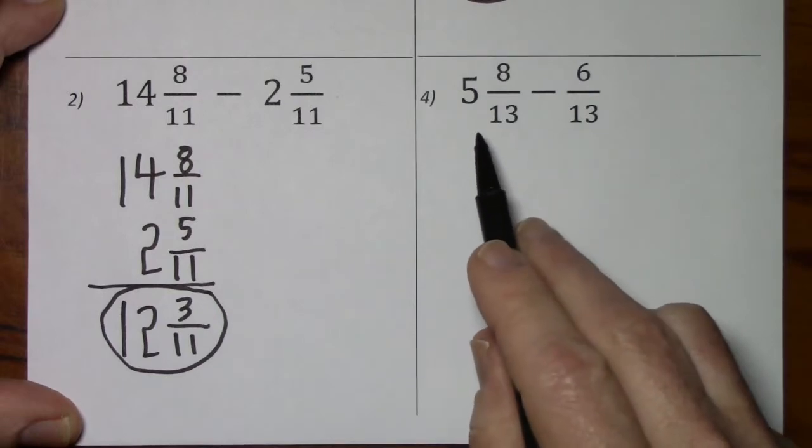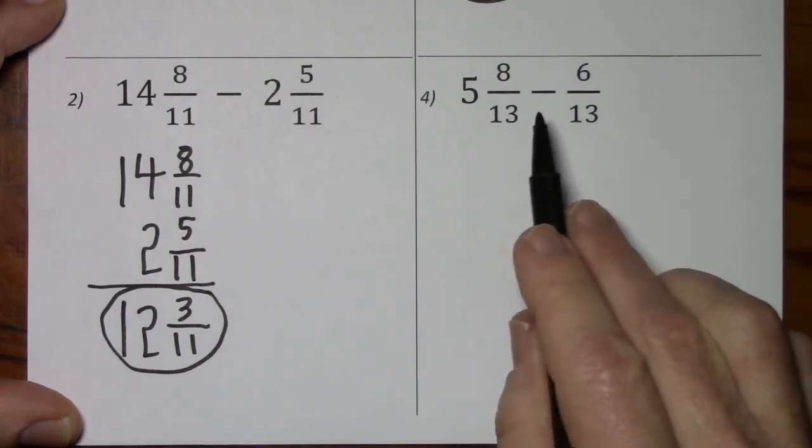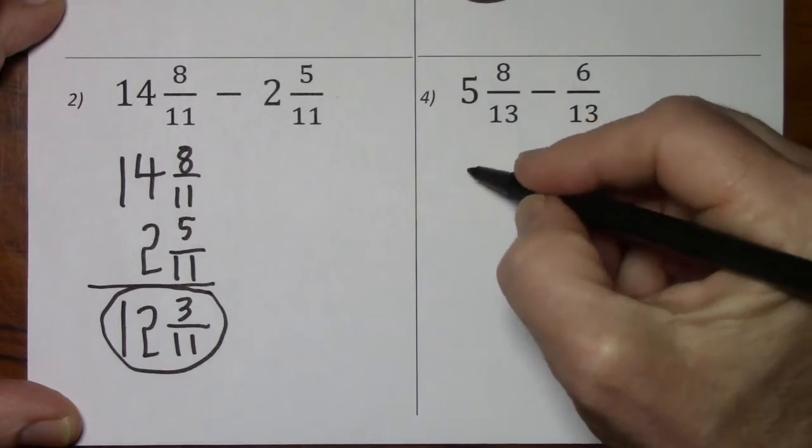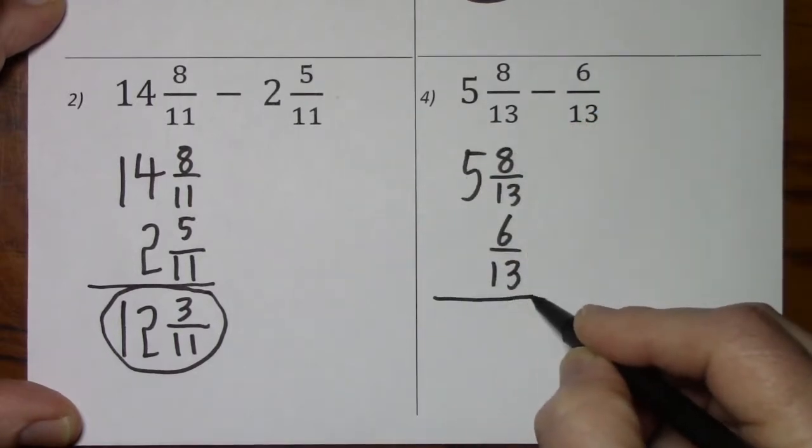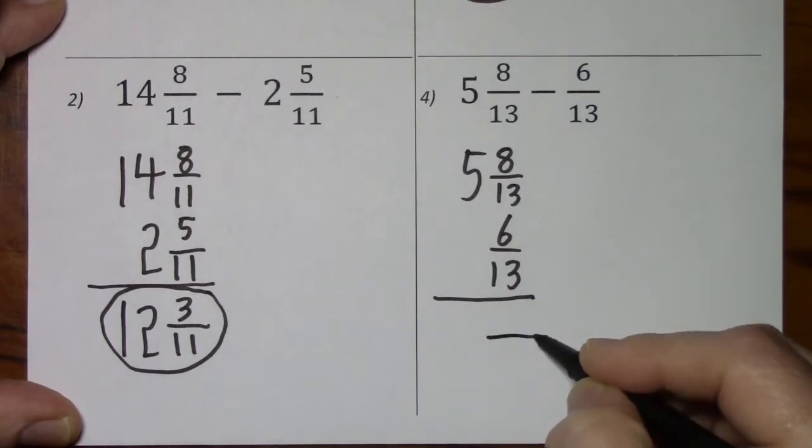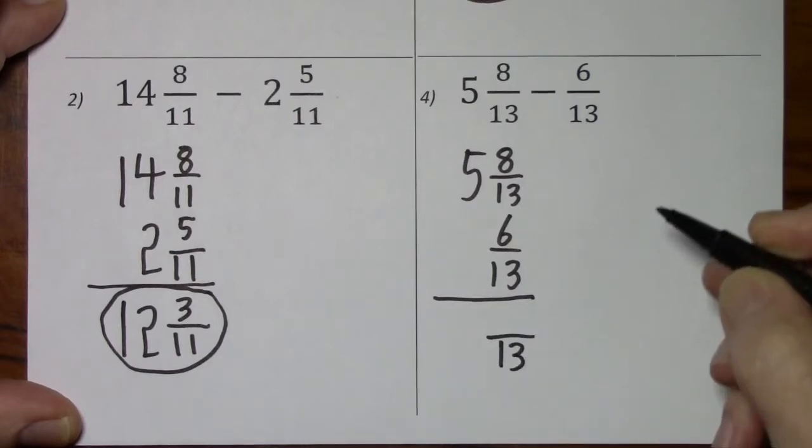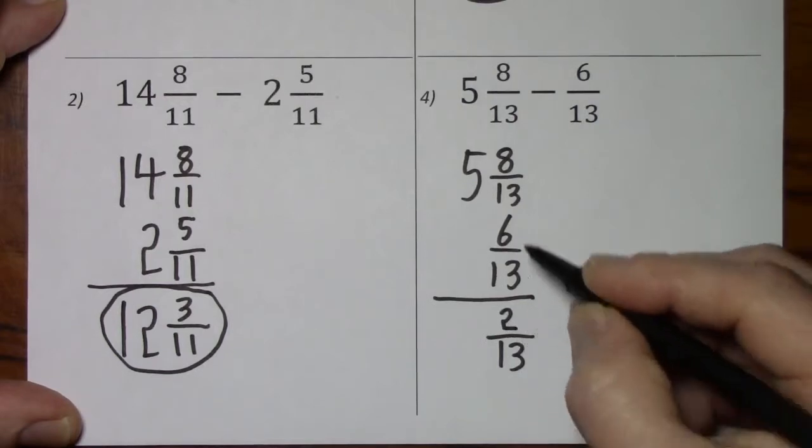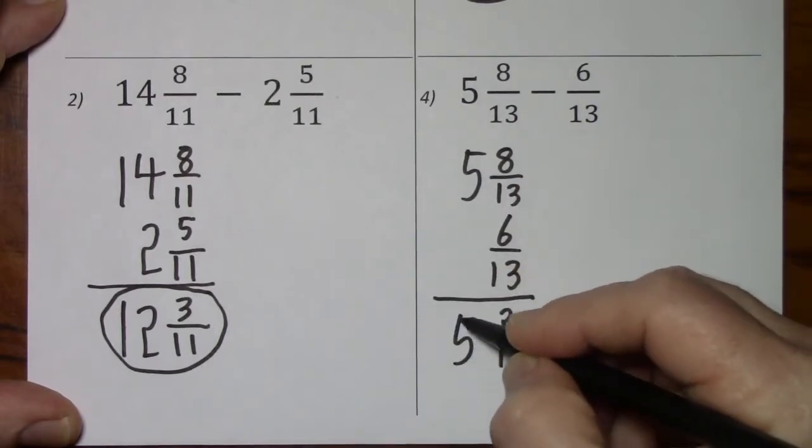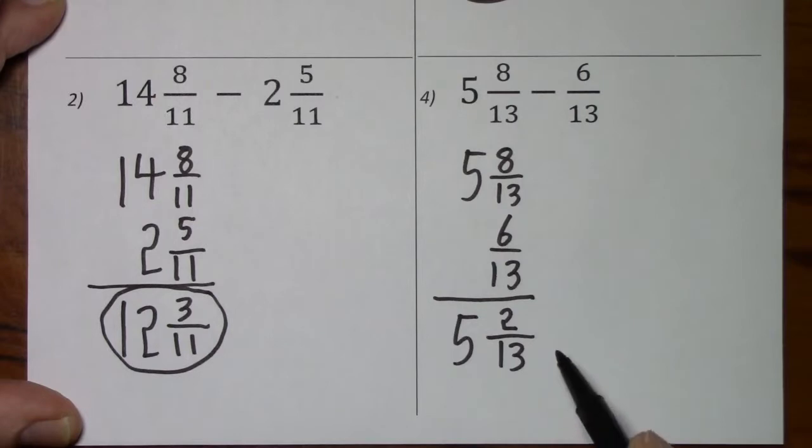5 and 2 thirteenths. Finally, looking at number 4, the signs are different. We will subtract. We keep our common denominator. 8 subtract 6 leaves us with 2. And this 5 simply comes down. So 5 and 2 thirteenths.